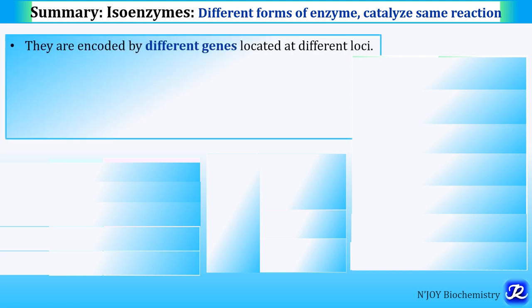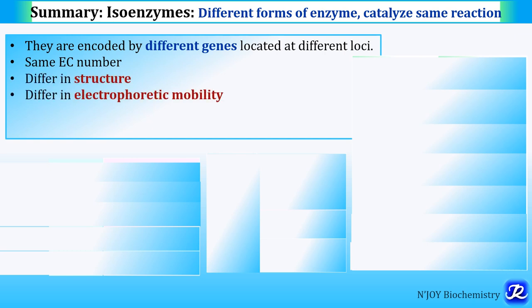They have the same EC number but differ in structure — amino acid composition and sequence — as well as electrophoretic mobility, tissue localization, and Km value.